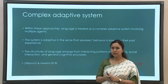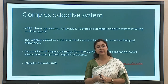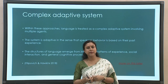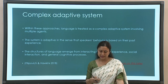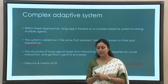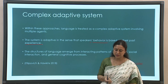Another quite recent theoretical position in language learning is that of the complex adaptive system. In this approach, language is regarded not as one single thing but as a complex system involving multiple agents. Language is not insulated from other practices — the speaker's behavior is based on past experiences and their mental and neural representations. The structure of language emerges from interacting patterns of these experiences, social interaction, and general cognitive processes. This is quite an important theoretical position and we will come back to it when discussing language processing in bilinguals. The theory was proposed by Filipović and Hawkins.